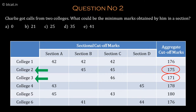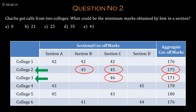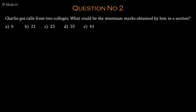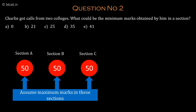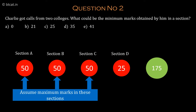College 2 has only two sectional cutoffs: section B and section C, at 45 marks each. College 3 has only one sectional cutoff: section C at 46 marks. So for both colleges, section A and section D have no sectional requirements, giving a lot of room to play. If we assume he gets 50 in three sections, then to reach a total of 175 he only needs 25 marks in section A or section D, satisfying all criteria. So the minimum marks in any section is 25.